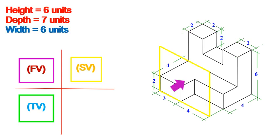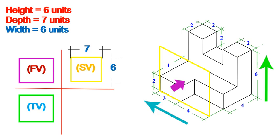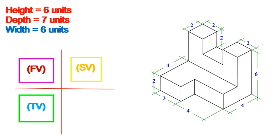For the left side view (LSV), from the left side, the height and depth — 6 units by 7 units — are visible, while the width is hidden. According to the first angle rule, this view is placed to the right of the front view.